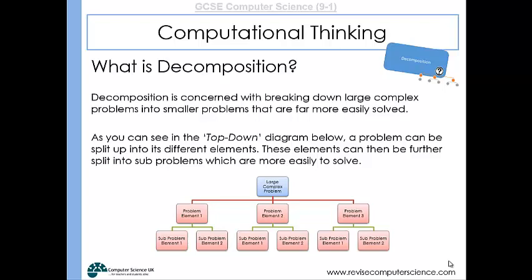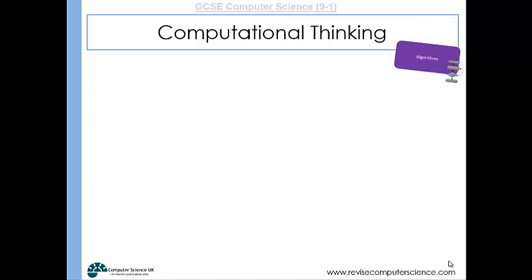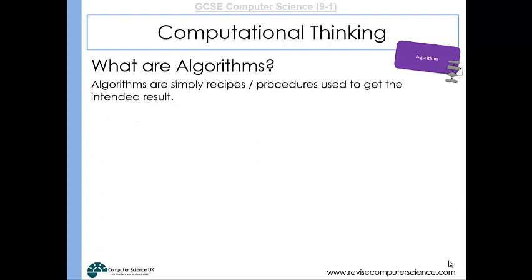And the last computational thinking technique is algorithmic thinking. So what is an algorithm? Well, an algorithm is simply a recipe to get an intended result, a recipe for a software solution.